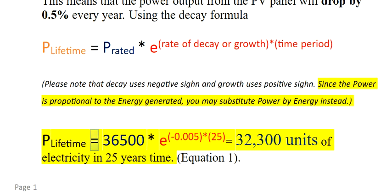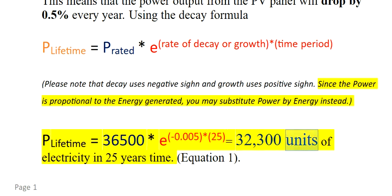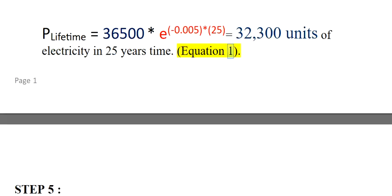P-lifetime equals 36,500 asterisk E to the power of (minus 0.005 asterisk 25), which equals 32,300 units of electricity in 25 years' time. This is Equation 1.